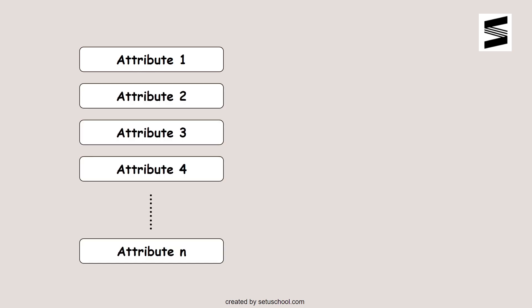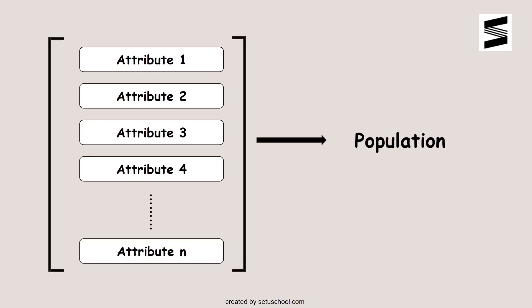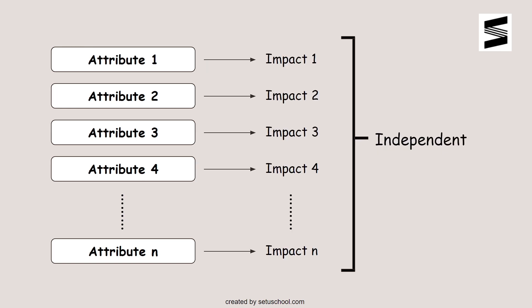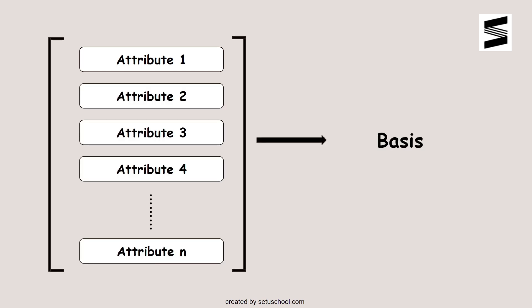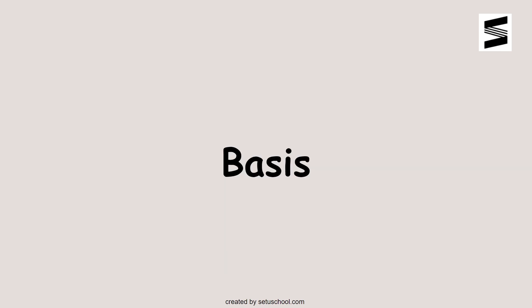These unique attributes collectively are enough to represent our entire population. If you look closely, the collection is capable of doing so because the impact of these attributes are independent of each other. This collection of attributes we call the basis of our population. This basis helps one to uniquely identify oneself among billions of others.